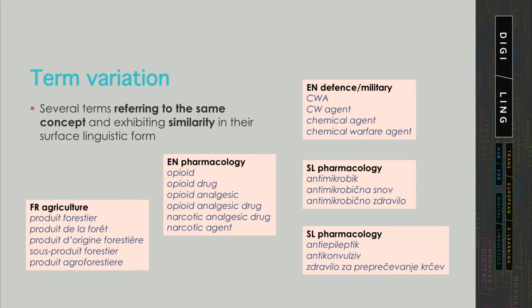Even if you don't know a word of Slovene, the upper example from pharmacology — 'antimicrobic' and its variants — represents term variation. But the lower example, 'anti-epileptic' and 'anti-convulsive,' doesn't, because while they all refer to the same concept, there is no similarity in the surface form.